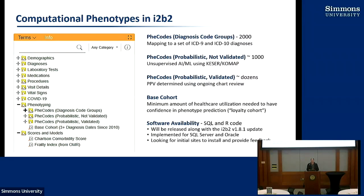We also have the base cohort - the starting population for this. If you're looking for patients who do not have diabetes, you would find patients who are in the base cohort but do not have the phenotype, rather than starting from your entire population. This pipeline is available in the 1.8.1 code in SQL Server or Oracle - it's not yet ported to Postgres. As we get more feedback from sites in SQL or Oracle, we'll see how much interest there is in Postgres and if we have resources to port it.